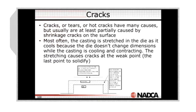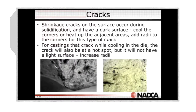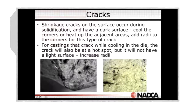Solidification cracks on the surface occur during solidification and have a dark surface, so when you break it open, you often see dark marks on the surface. Or it can look like the image on the right, where you have a number of little shrinkage cracks on the surface. For a casting that cracks while cooling in the die, the crack will also be at a hot spot, but it will not have a light surface or increase in radii.